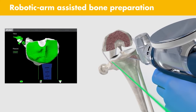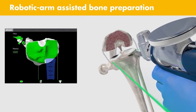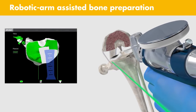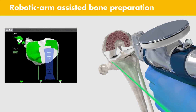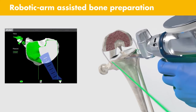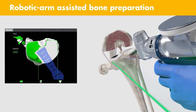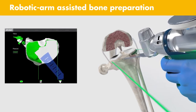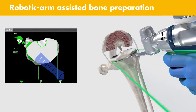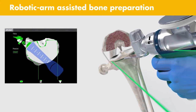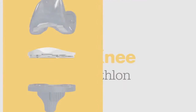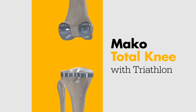With robotic arm assisted bone prep, the Mako Total Knee application does not require alignment instruments or cutting guides. Similar to Mako partial knee, virtual boundaries assist the surgeon in executing bone resections to the final plan. These virtual boundaries have the potential to protect essential anatomical structures of the knee during bone preparation, including the PCL and the popliteal artery.